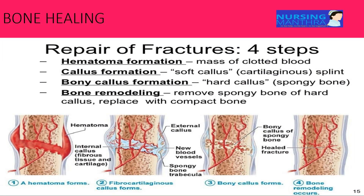Now we can see how bone heals, especially when a fracture injury occurs. There are mainly three stages of bone healing. First is the early inflammatory stage. In this stage, a hematoma develops within the fracture site. Once a bone gets fractured, hematoma formation occurs. You can see in the picture the hematoma formation where blood is stored in this area.